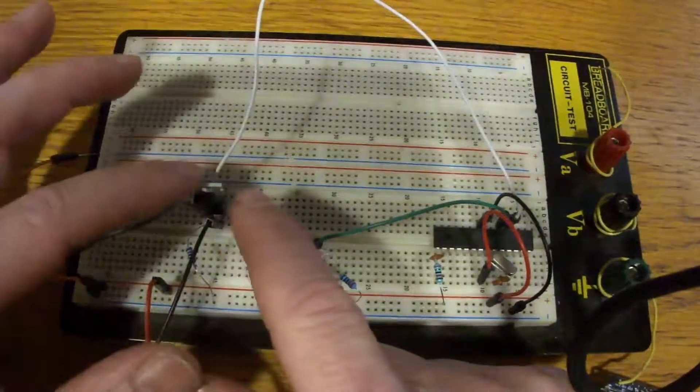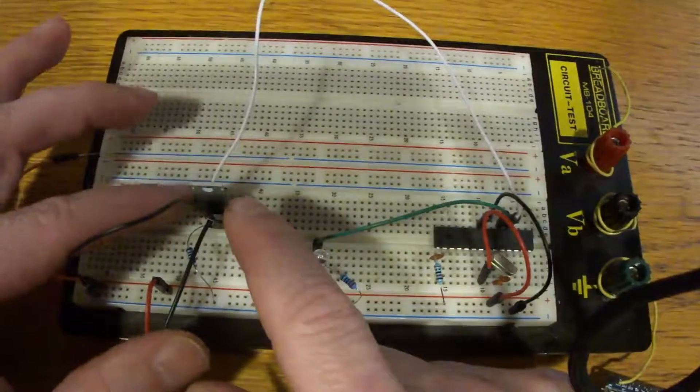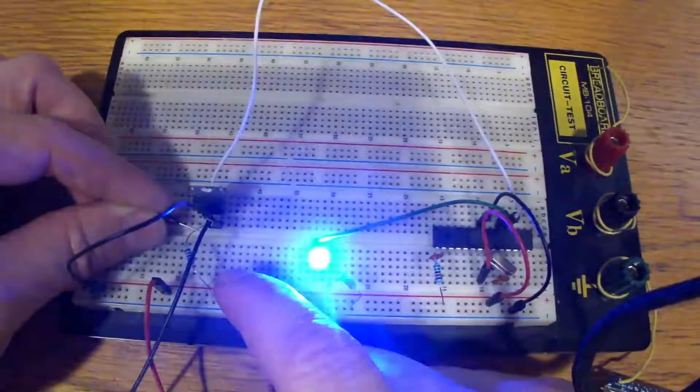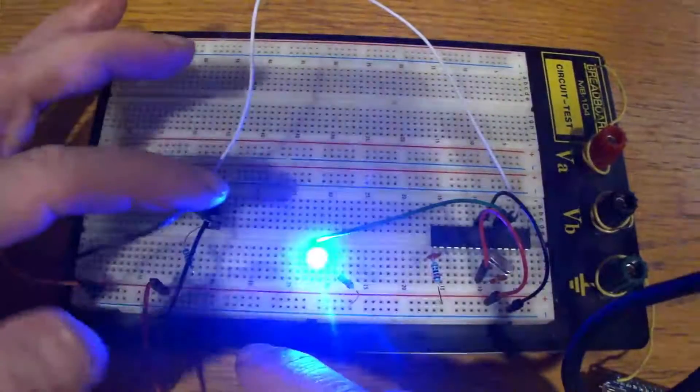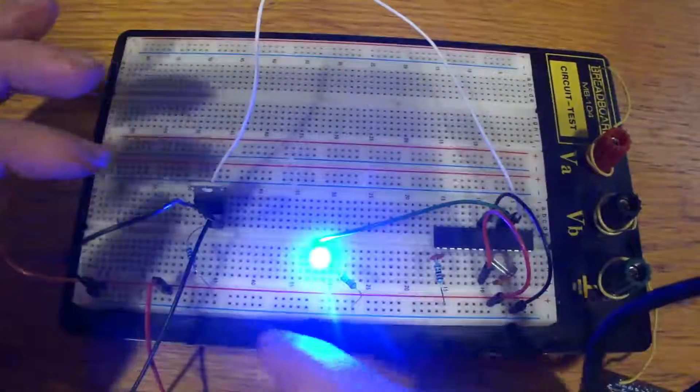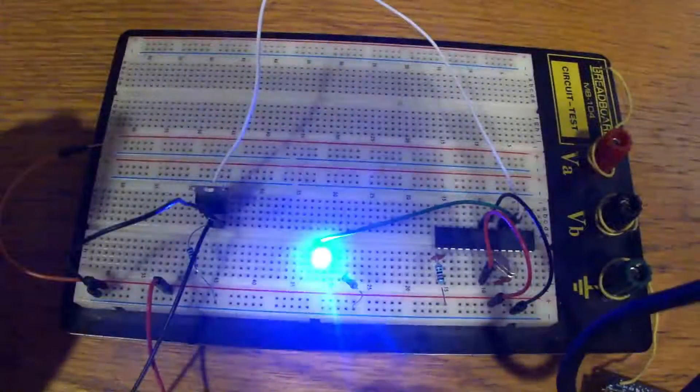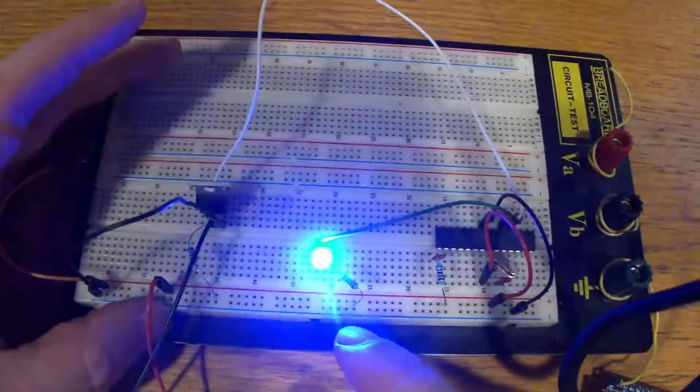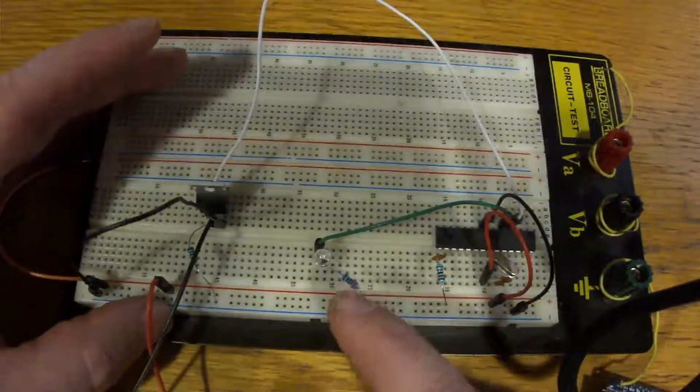So, a MOSFET, the way it works, is on pin one, which is the gate, we can put a voltage in, and it will then allow the ground to then connect, and as you can see, the Arduino is activated, and this is a variation of the blink program. Very, very simple.